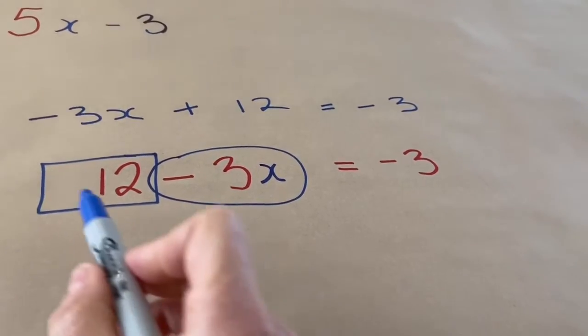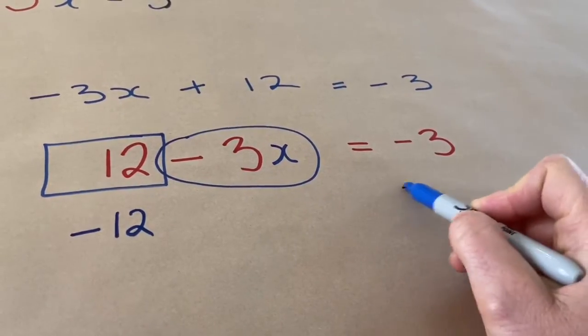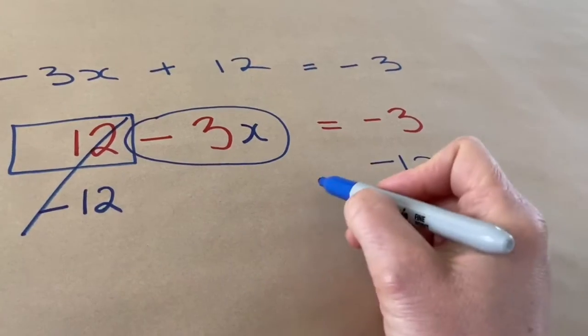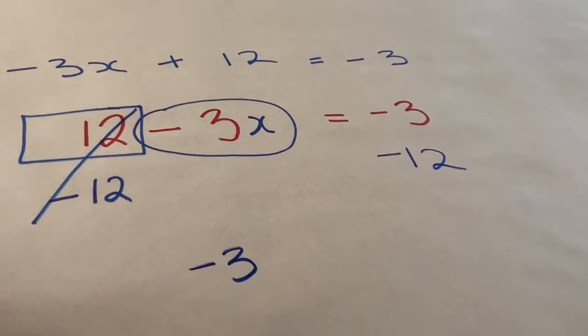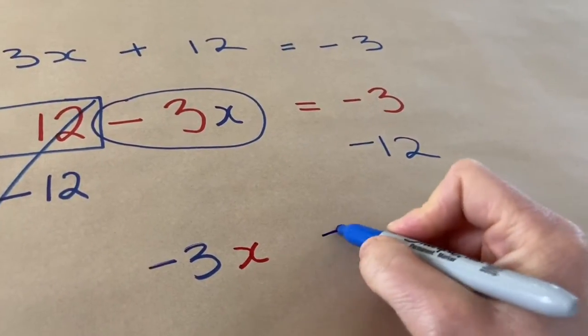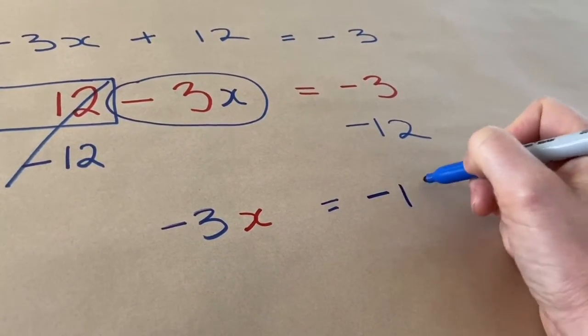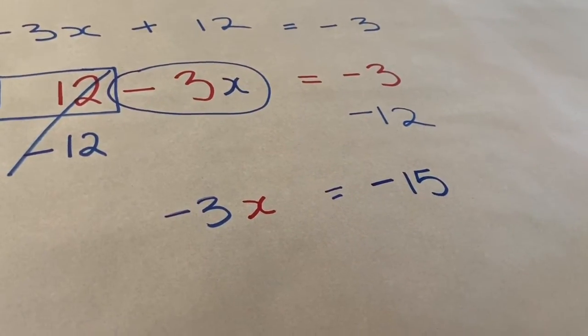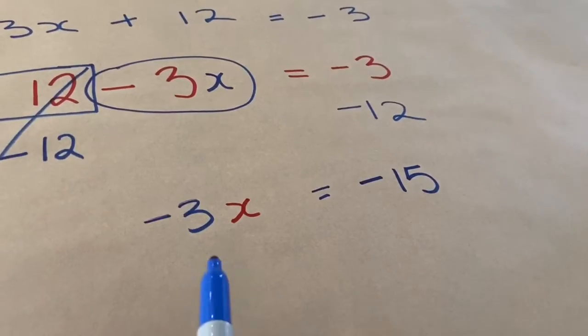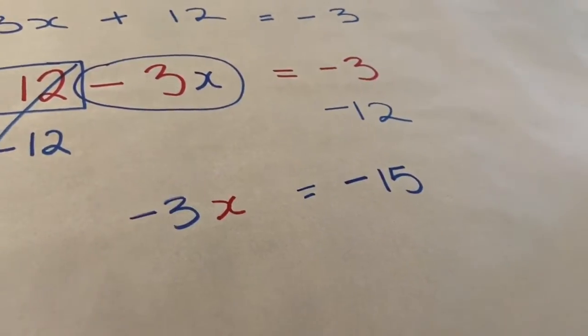So the first thing that I want to undo is I want to undo this plus 12, so I'm going to put a minus 12 here and a minus 12 over here. These would cancel out, and all I have on the left side is minus 3x equals negative 3 subtract 12 would give me negative 15. A mistake that is very common is that people just write down the 3. They don't write down the negative 3. You need to remember that the sign that comes in front stays with that number.